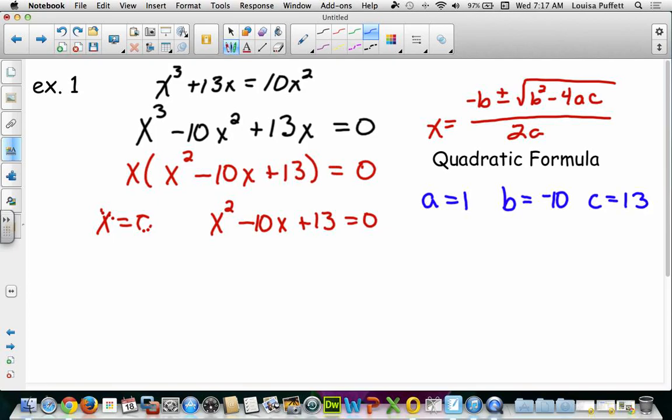Now what we need to do is substitute these values for a, b, and c into our quadratic formula. So when we do that, we say that x equals the opposite of b, so the opposite of negative 10 is a positive 10. So it equals 10 plus or minus the square root of 10 squared, which is 100, minus 4 times 1 times 13, which is really 4 times 13, which is 52. And this whole expression here in my numerator goes over, and in my denominator, I have 2 times 1, which is 2.